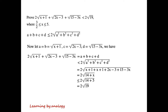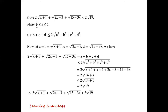Collecting like terms, this equals 2√(14+x). Since x ≤ 5, we have 2√(14+x) ≤ 2√(14+5) = 2√19. Therefore, 2√(x+1) + √(2x−3) + √(15−3x) < 2√19.